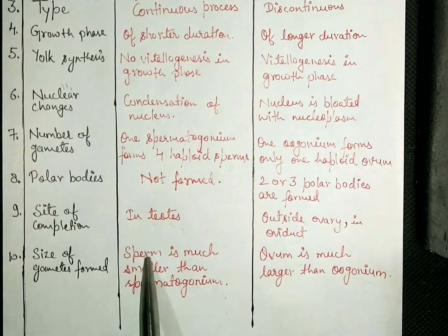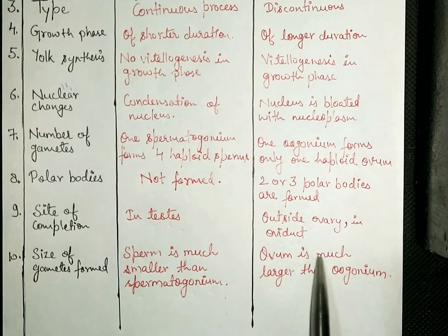Sperm का size काफी छोटा होता है spermatogonium से. While ovum is much larger than oogenium.